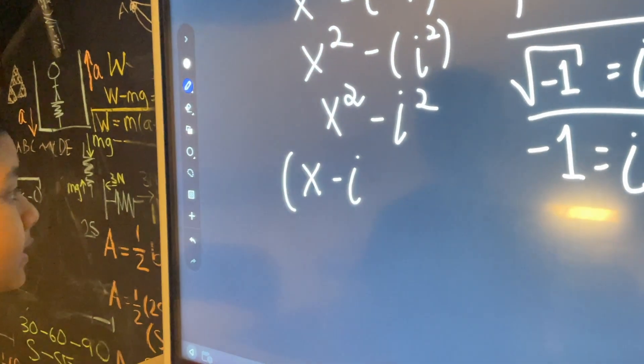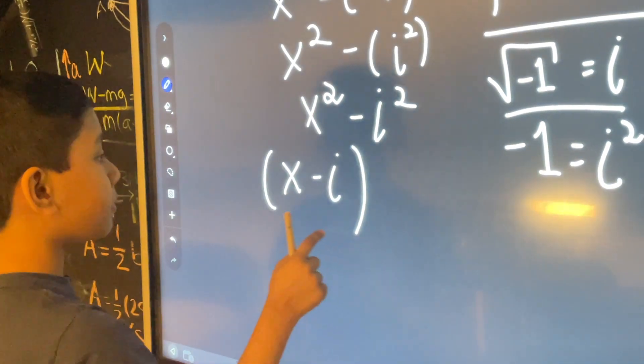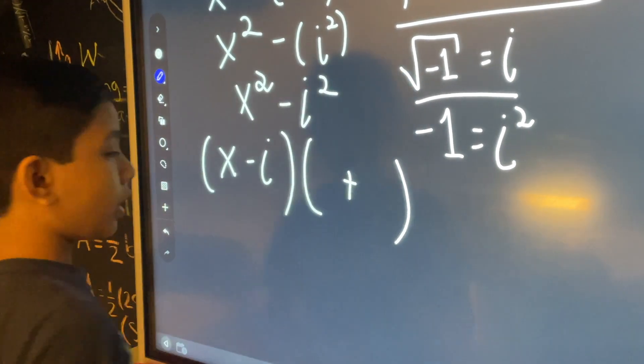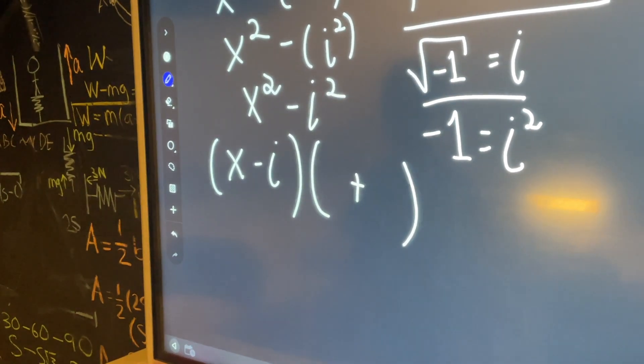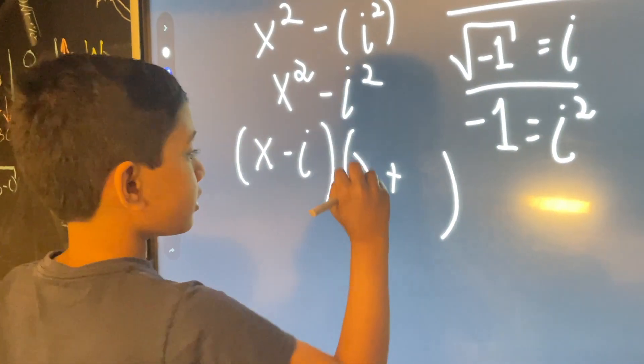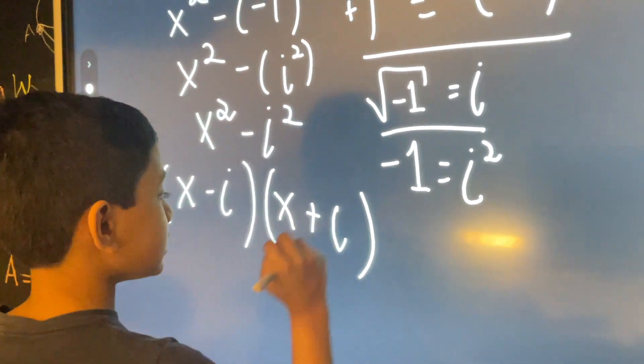plus times minus is a minus. A minus times minus would just be a plus. So the only way for this to work is if it was a plus. And then you have x plus i.